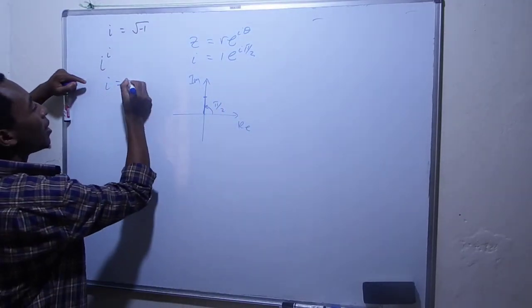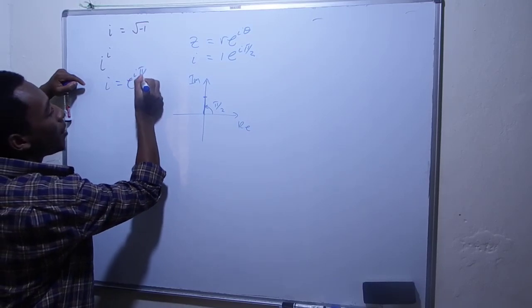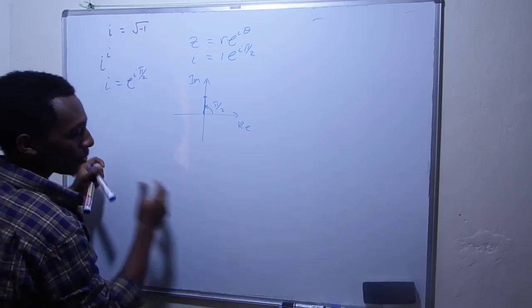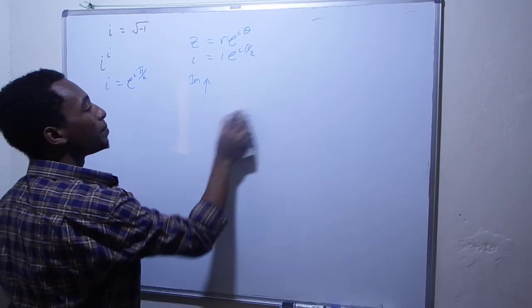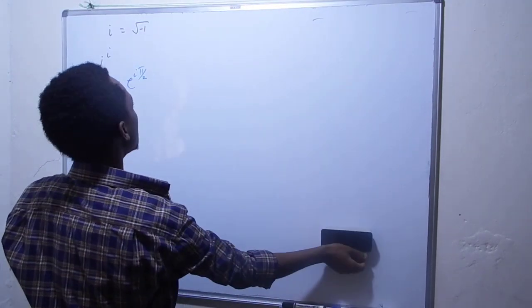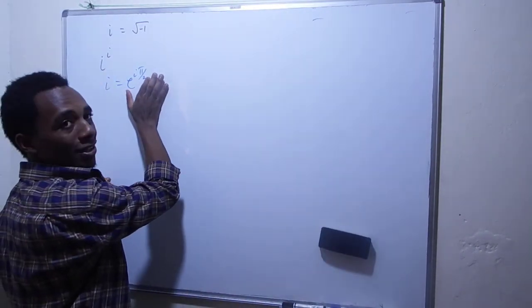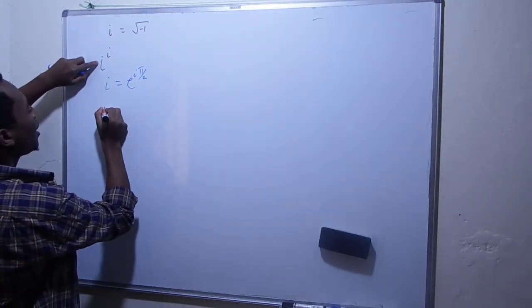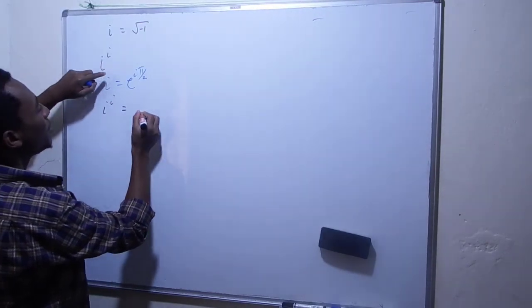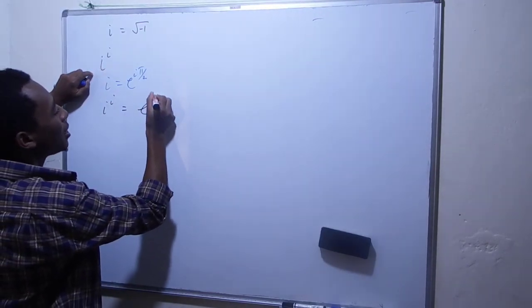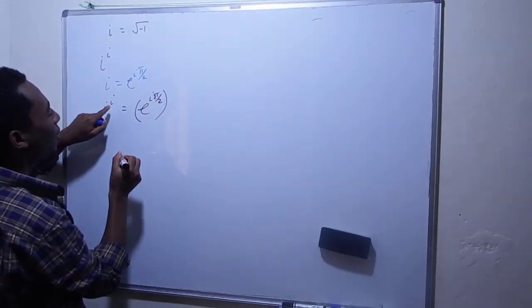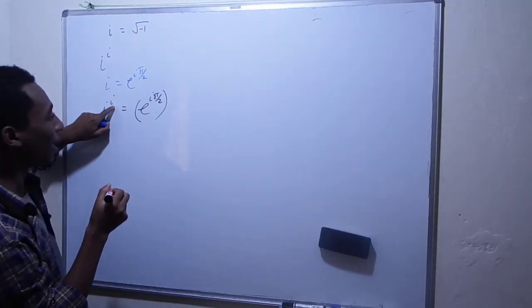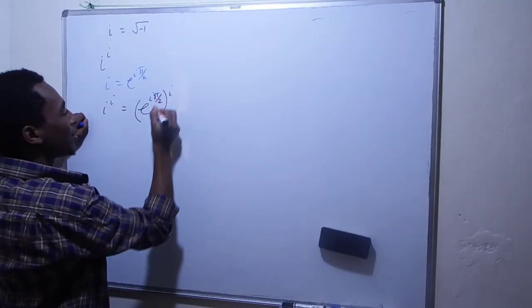So i equals e to the i times π/2. I'm going to write the bottom i in this form. So i to the power i is e to the i times π/2, raised to the power i.